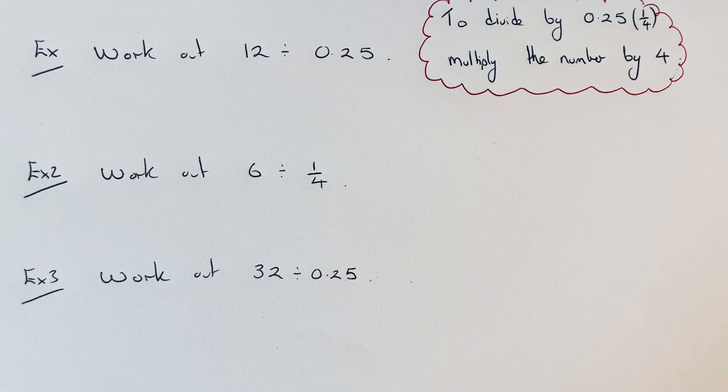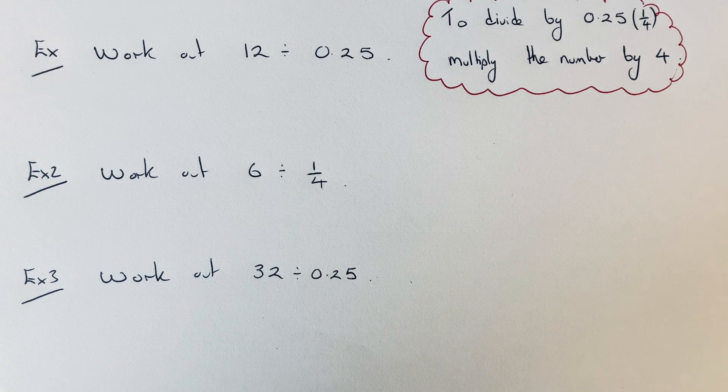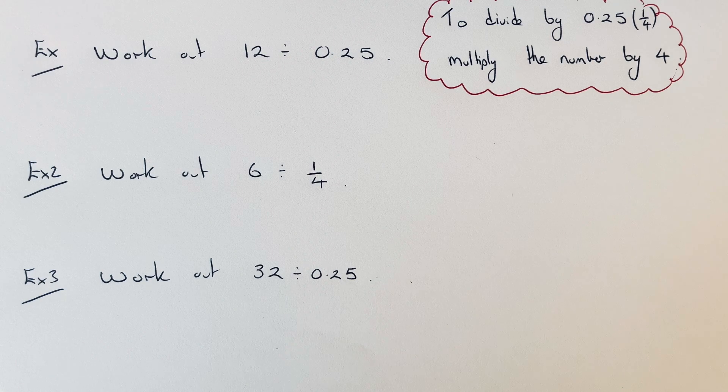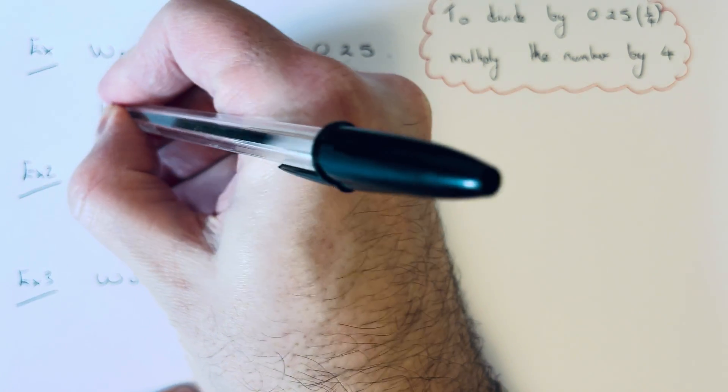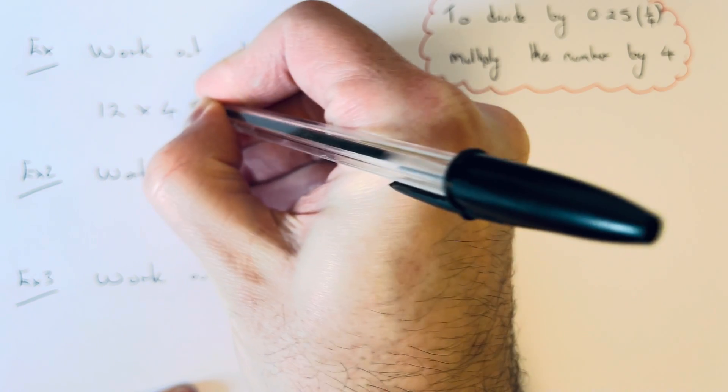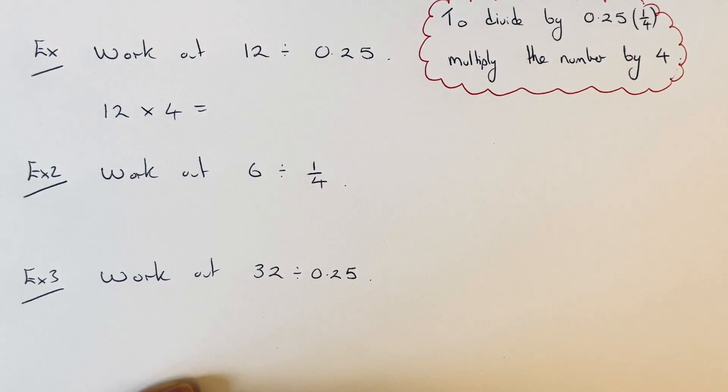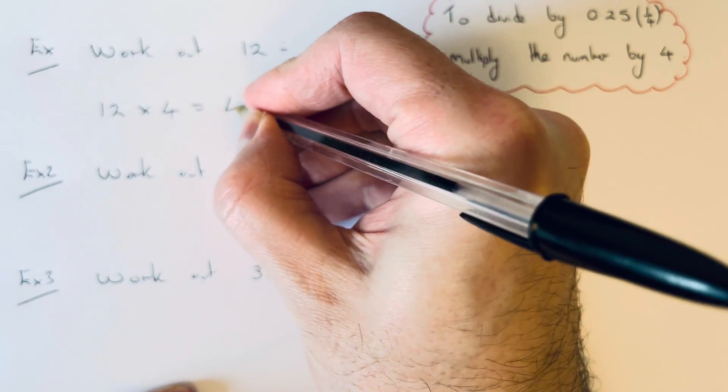So let's have a look at the first example. We've got to work out 12 divided by 0.25. So the quick way to do this is just to multiply the number by 4. So 12 times 4 is 48.